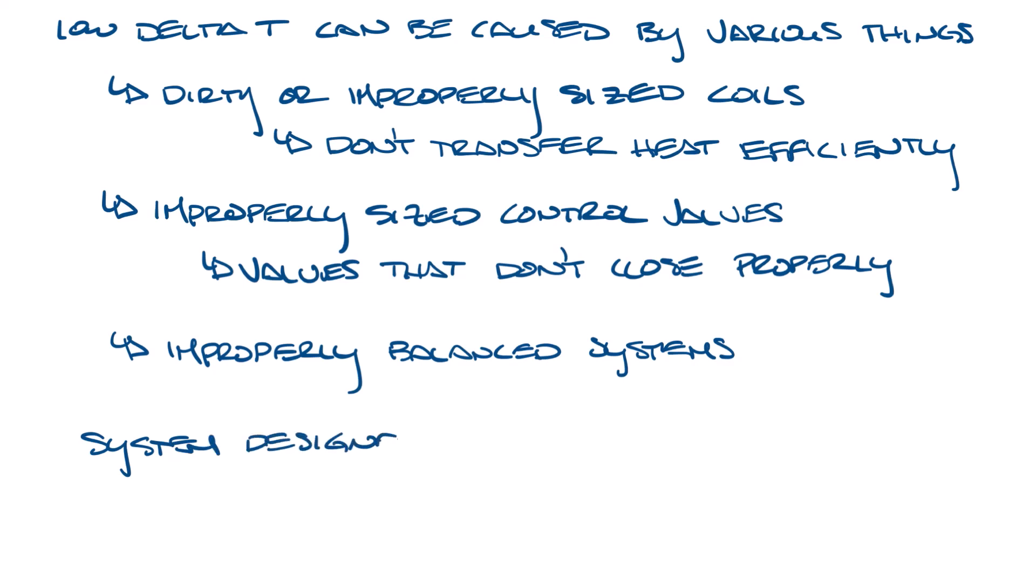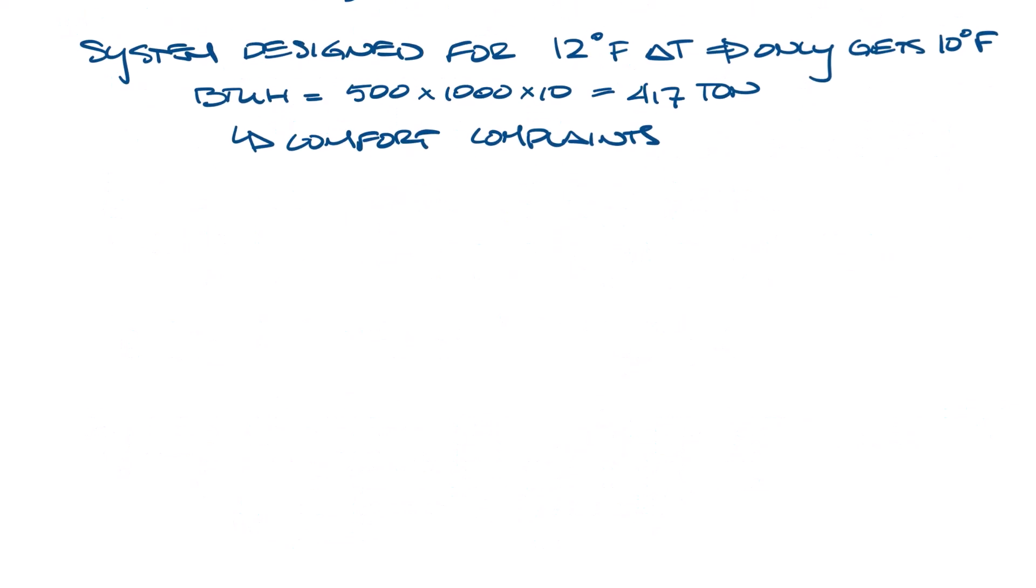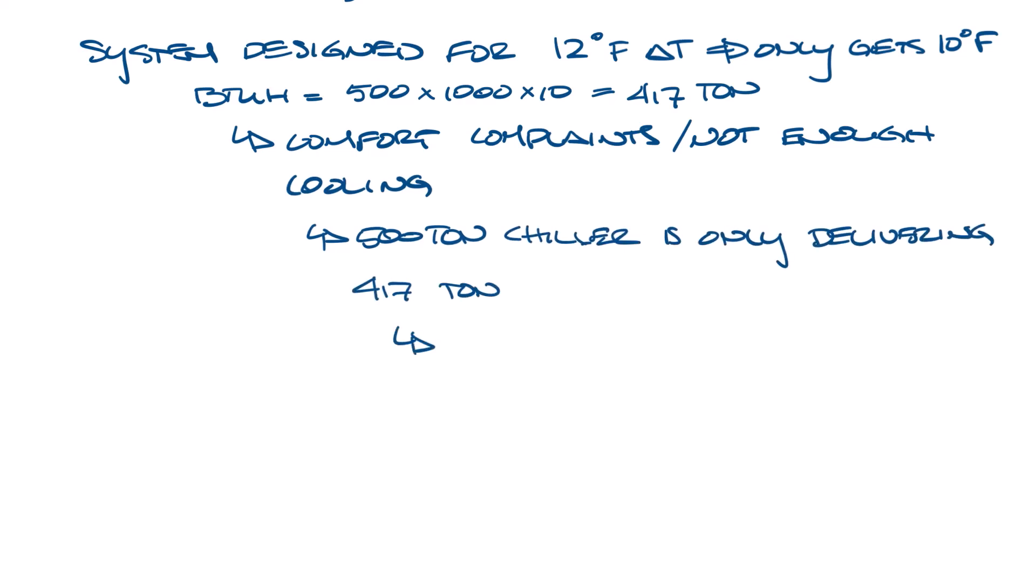In my example, I made the math easy, but if the system was designed for 12 degree delta T, and let's say it's only getting 10 degree delta T due to oversized coils, then if we do the BTU math here, we get 500 times 1,000 times 10, and that gives us 417 tons. In this situation, you might get comfort complaints about not having enough cooling in the space, because your 500 ton chiller is only delivering 417 tons of cooling. And this might result in someone increasing the pump speed, or even another chiller being cycled on to meet the load. And both of these would be a waste of energy.